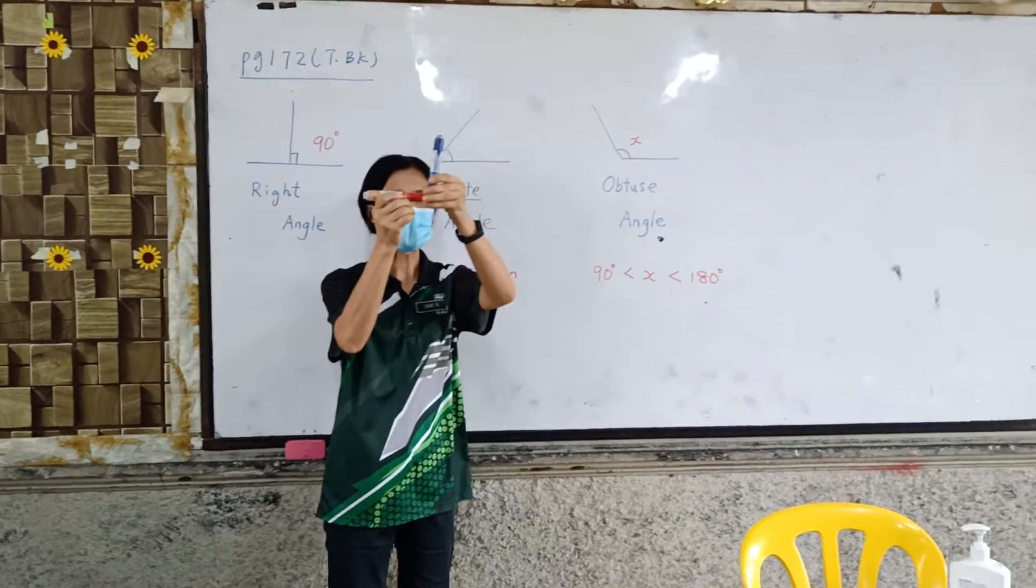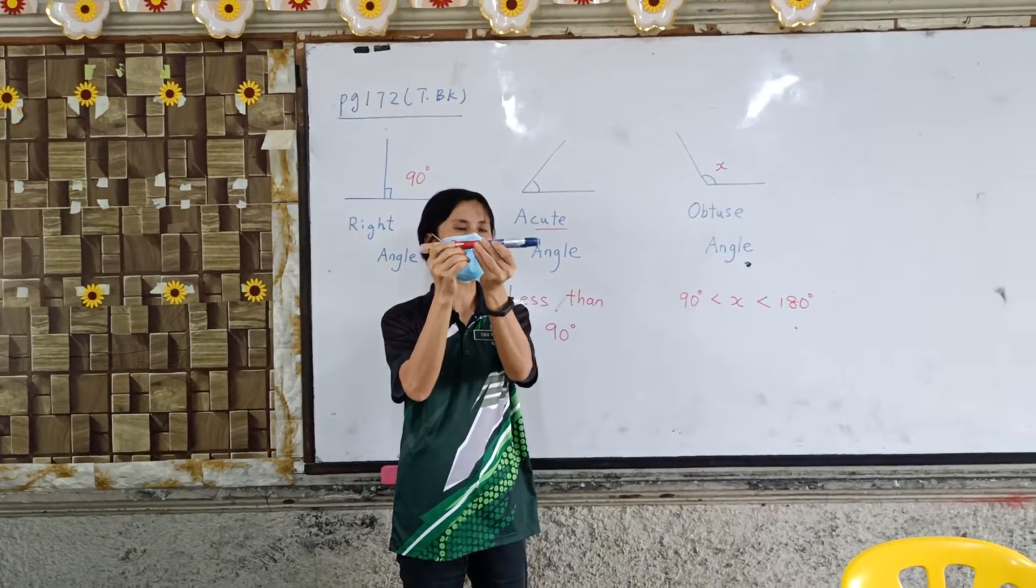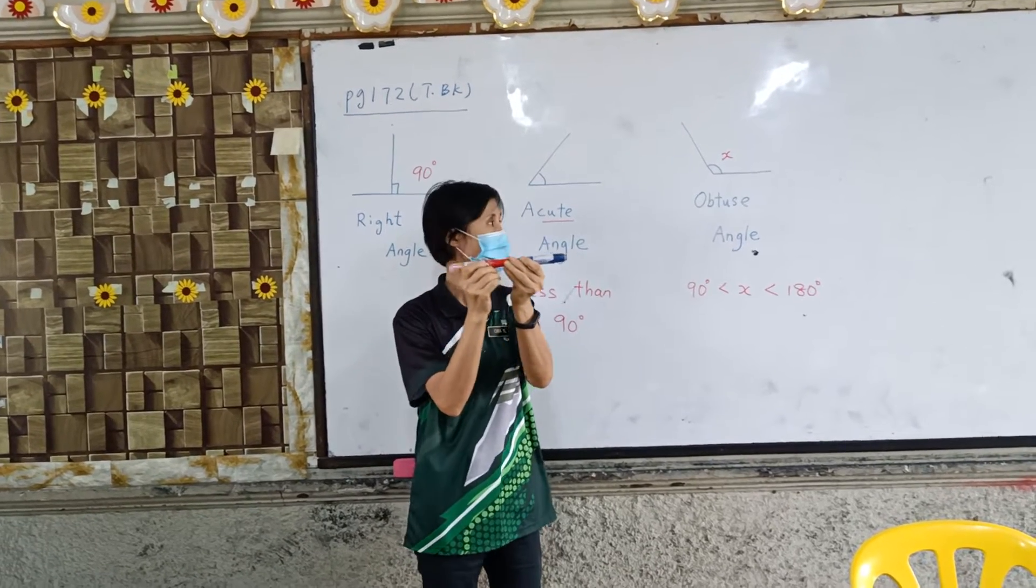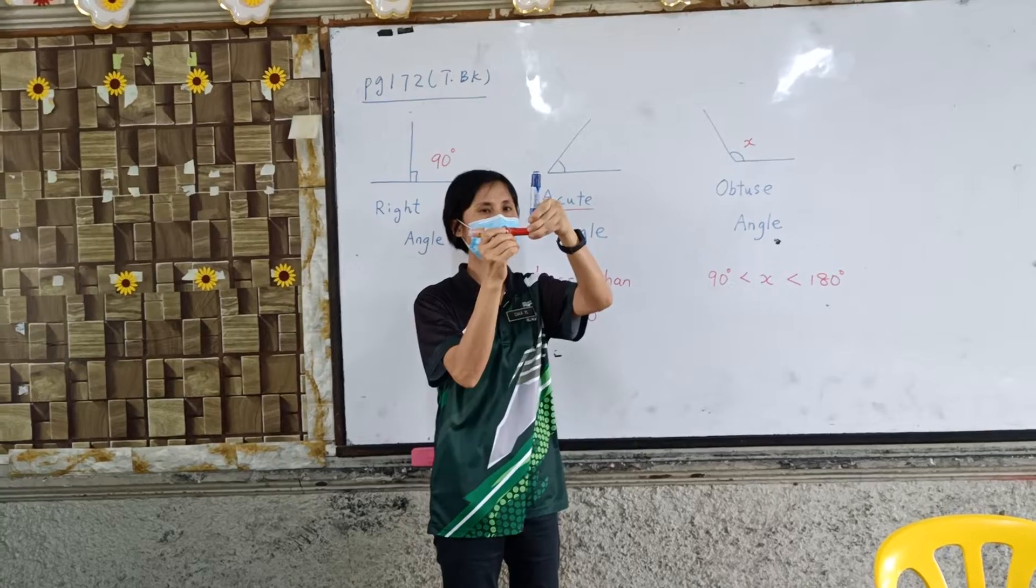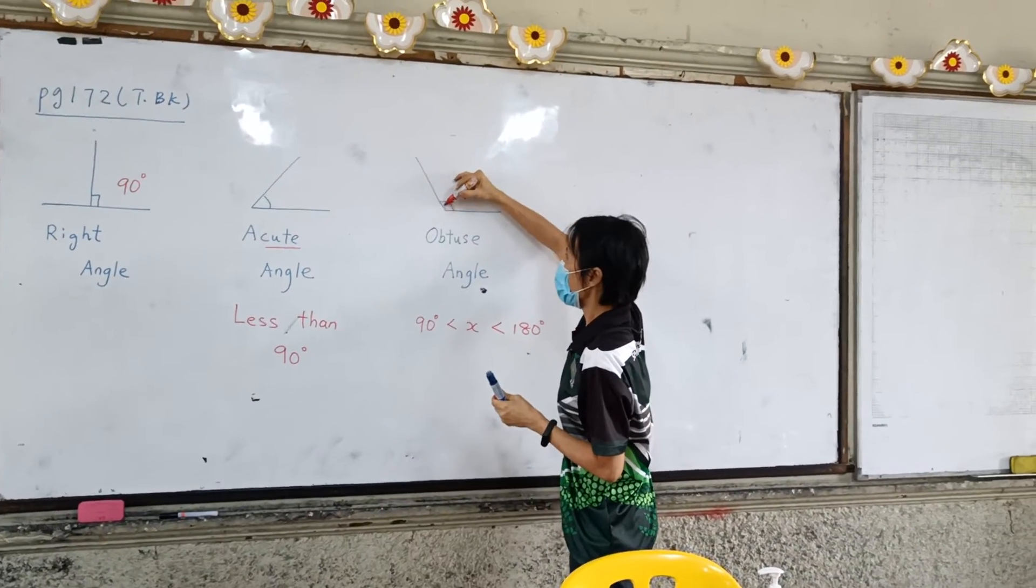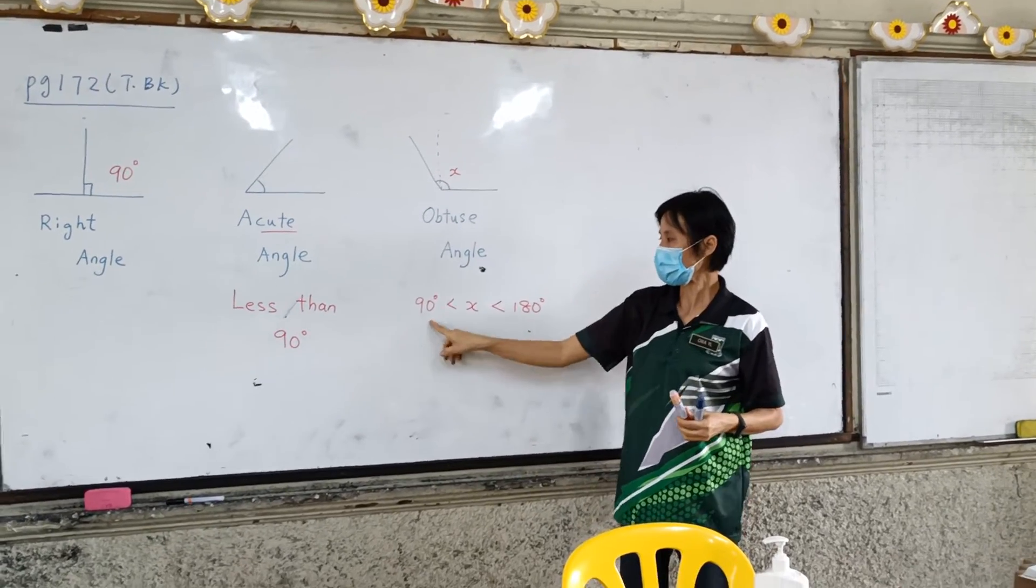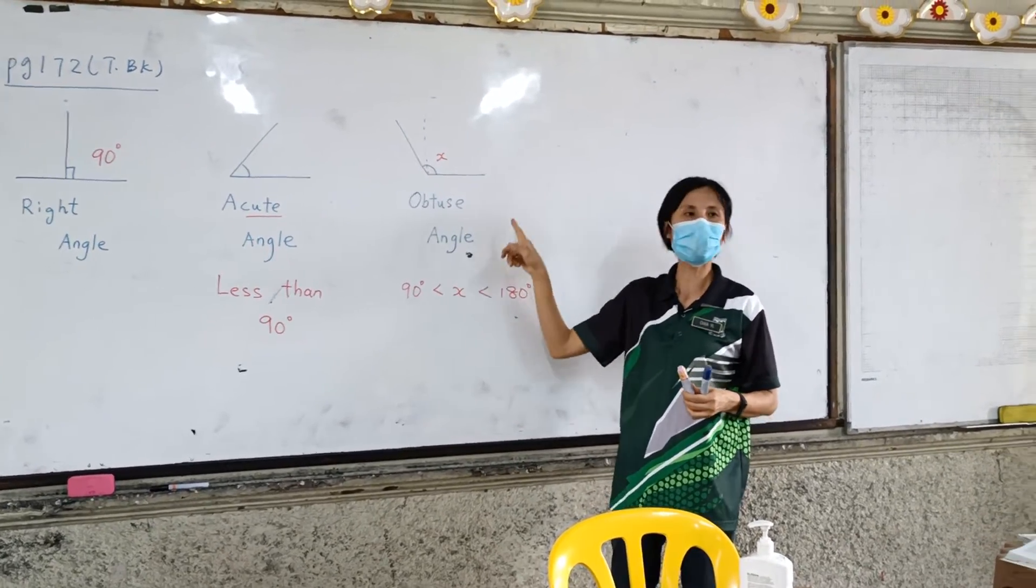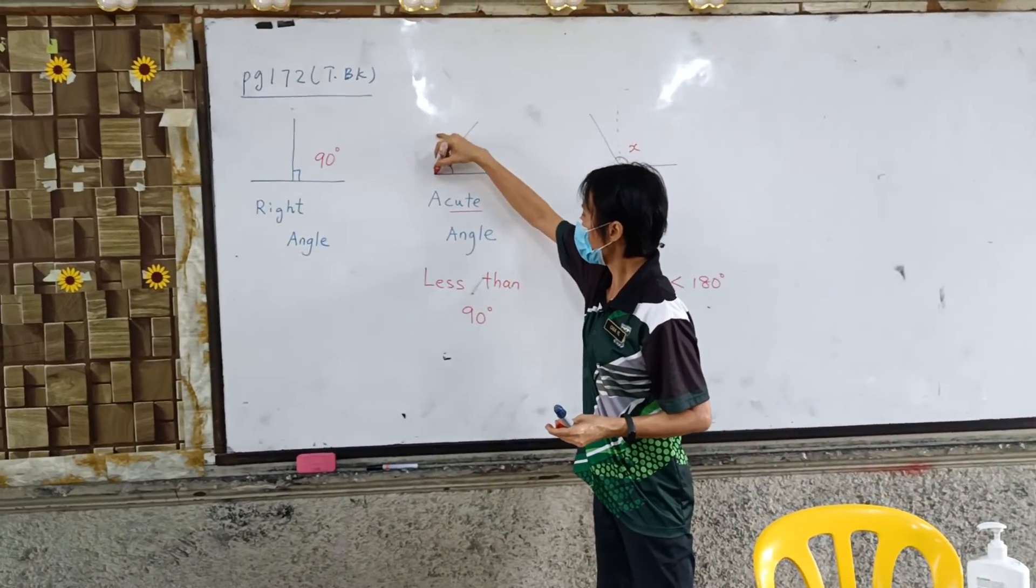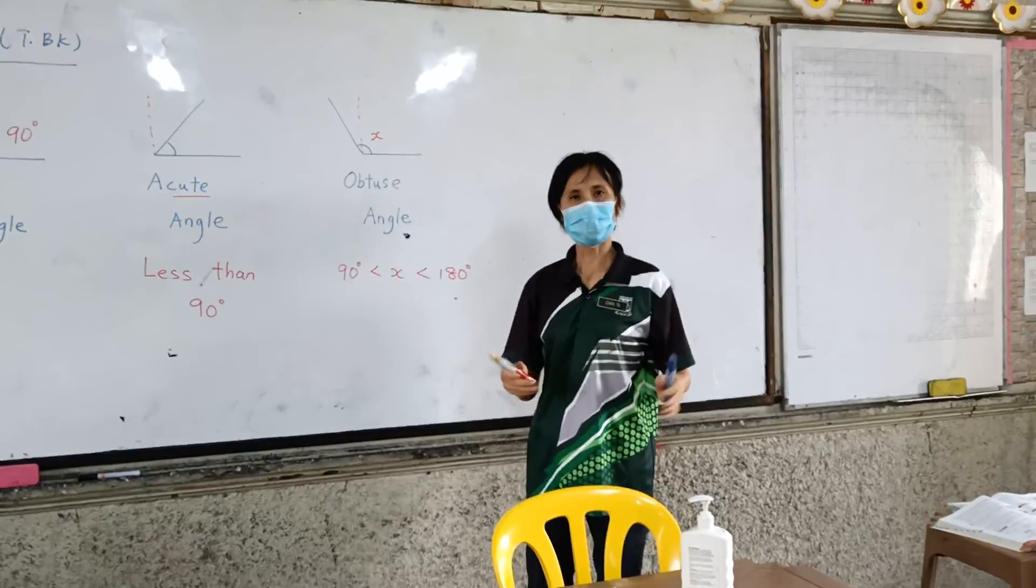But if the angle is more than 90 but less than a straight line, straight line is 90 degrees. Do you remember? Yes. But more than 90, less than 90 degrees like this. More than 90 degrees like this. More than that. So, more than 90, less than 90 because of a cute angle. Remember? So, cute angle, less than 90. Of a cute angle, more than 90. Okay, stop.